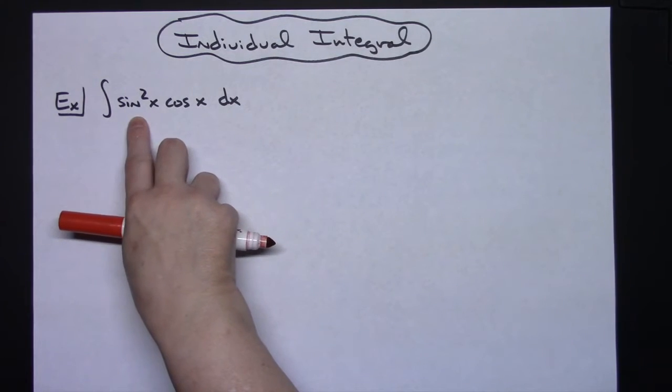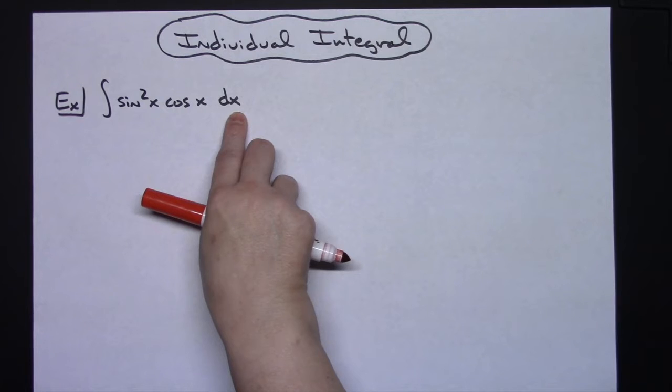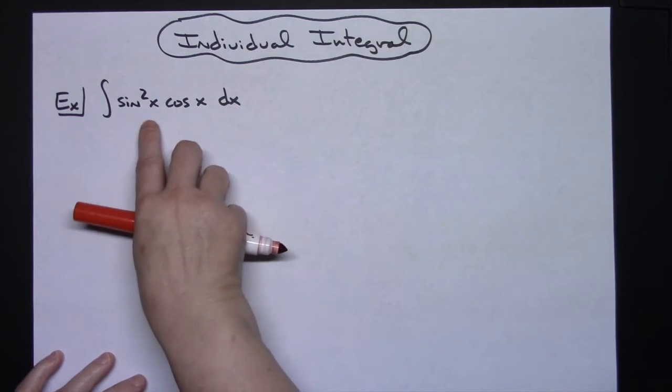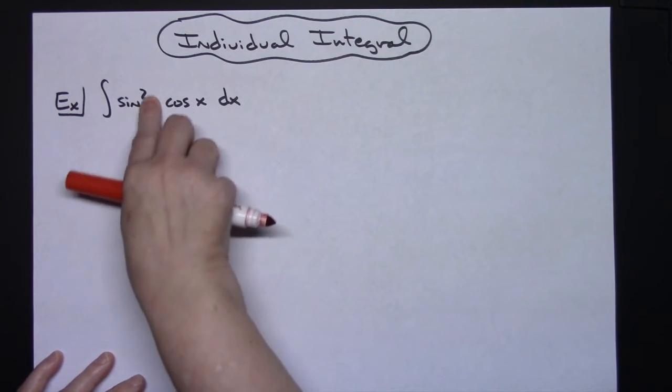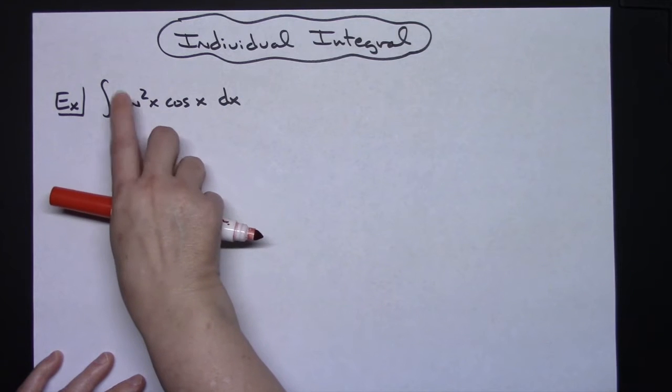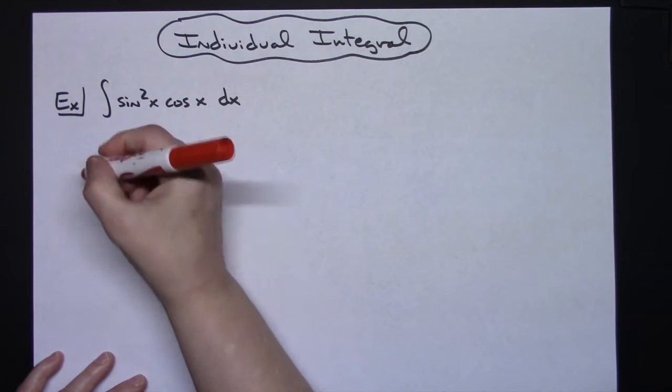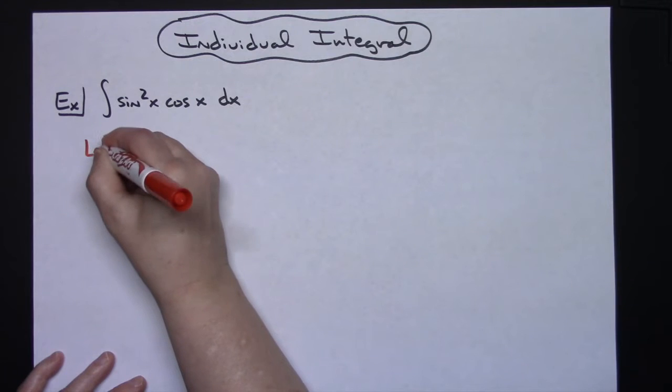I'm going to be integrating sine squared x cosine x dx. I'm going to look for the inside portion of the function. Right here, I've got a sine x squared, so my inside function is going to be sine x. That's where I'm going to start with my u-substitution.